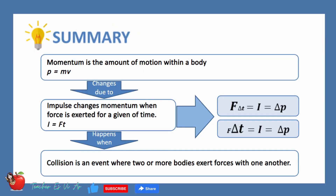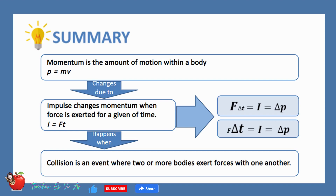In summary, we have learned that momentum is the amount of motion within a body. The momentum of an object may change due to impulse when force is exerted on that body within a specific period of time. Impulse happens during every collision of objects. Collision is an event where two or more bodies exert forces with one another for a given period of time.